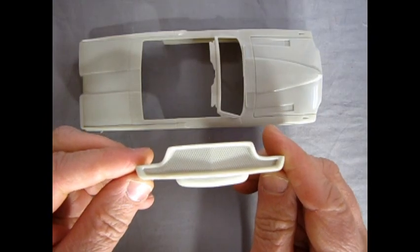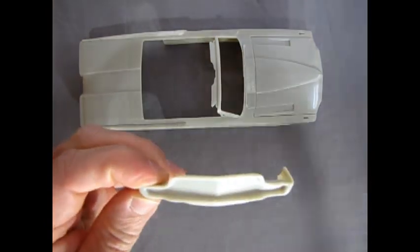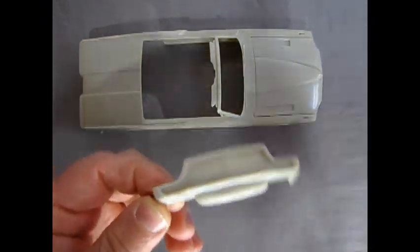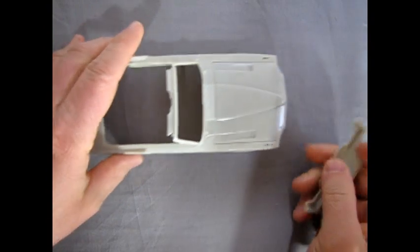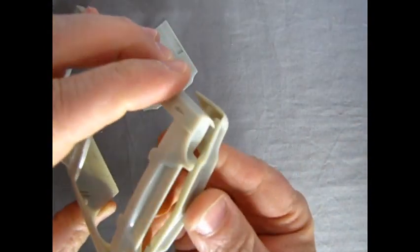Next up we have our custom grill for the custom version. And as you can see, there is a grill pattern in here. And how does it fit to our body? Well, that's why I left the body down here. There goes the hood.